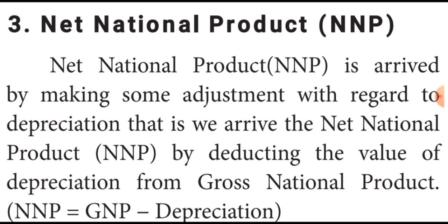NNP is equal to GNP minus depreciation. Through GNP — total production — minus depreciation, meaning the destroying goods items amount is reduced. That is called net national product.